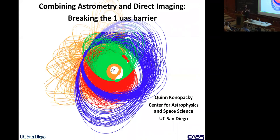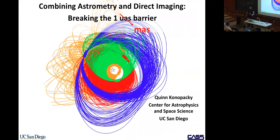The subtitle of this talk was about breaking a micro arc second barrier — one times ten to the minus six of an arc second. I decided to change it to the milli arc second barrier, since we haven't really gotten to that point yet. For this future directions section, I think this is where we need to get to first before we can consider going to the micro arc second level.